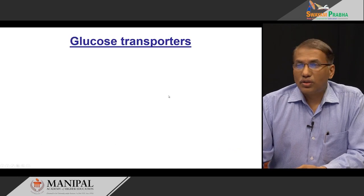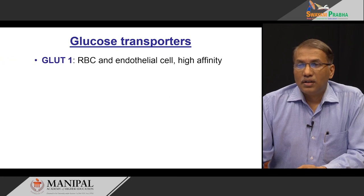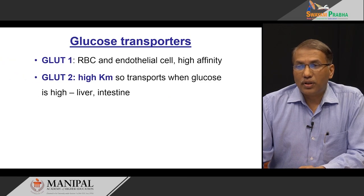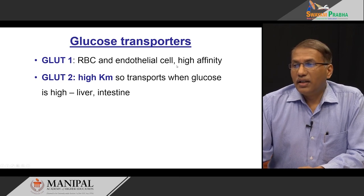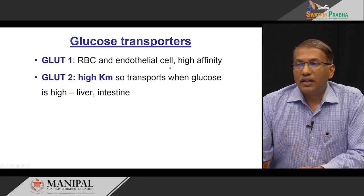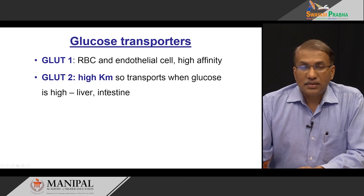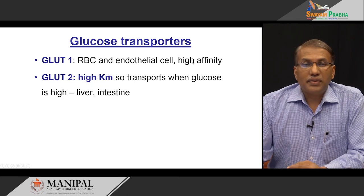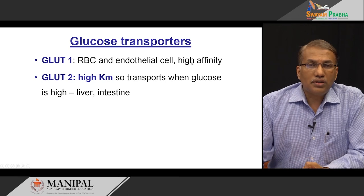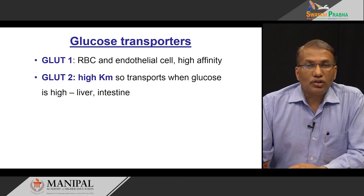Now let us see the glucose transporters one by one. Let us concentrate on the two important extreme transporters: GLUT1 and GLUT2. GLUT1 has very high affinity and is present in red blood cells, endothelial cells, and brain. High affinity means that even with the lowest possible glucose available in the blood, it should be able to transport glucose into these organs.